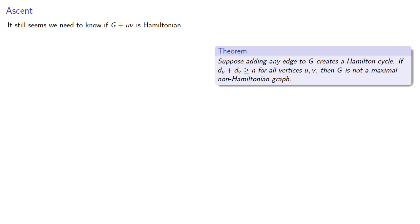Now, it still seems we need to know if G plus is Hamiltonian. Can we avoid that? Let's consider. Suppose for some graph G it's already true that the vertex sum is greater than or equal to n for all vertices u and v.